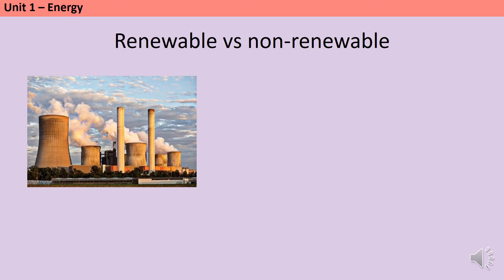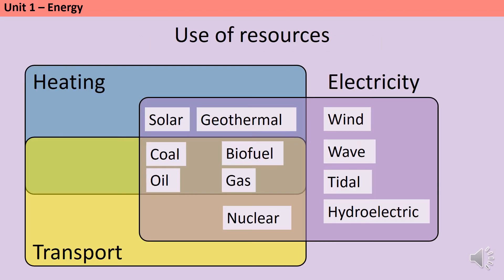Energy resources can be described as renewable or non-renewable based on whether it's possible to obtain more of that resource in the time it takes us to use it. Non-renewable resources are sometimes referred to as finite. All of the resources we're going to look at can be used to generate electricity, but some can also be used directly to heat homes or fuel transport.